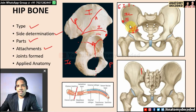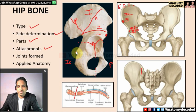Below the inferior gluteal line there is the reflected head of rectus femoris muscle. The straight head arises from the anterior inferior iliac spine, while the reflected head arises from the area just below the inferior gluteal line. The attachment on the iliac fossa is the iliacus muscle.